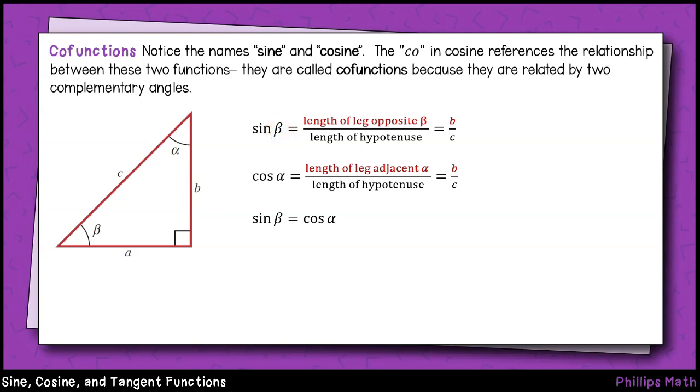So for example, sine of beta is equal to side b divided by the hypotenuse c, and cosine of alpha is side b divided by the hypotenuse c. In other words, sine of beta is equal to cosine of alpha and vice versa.